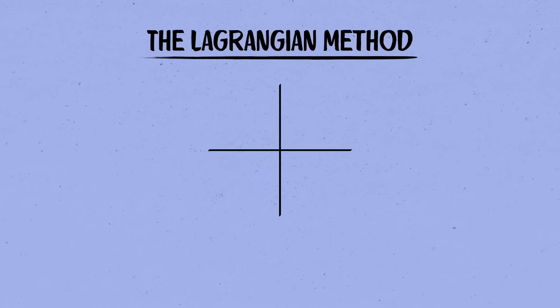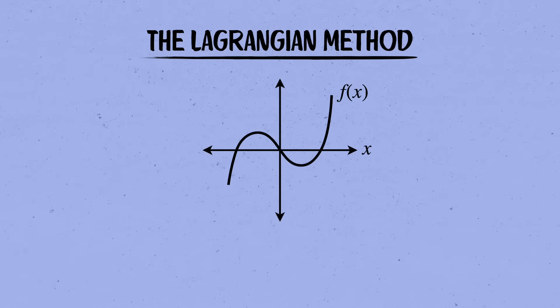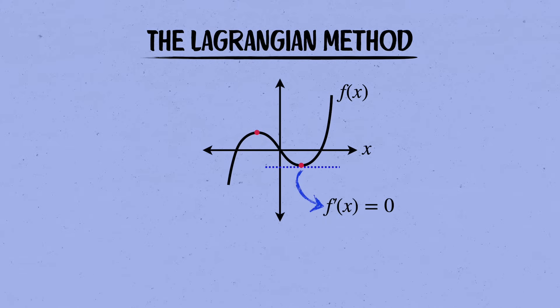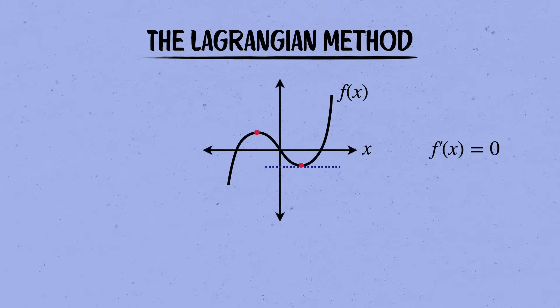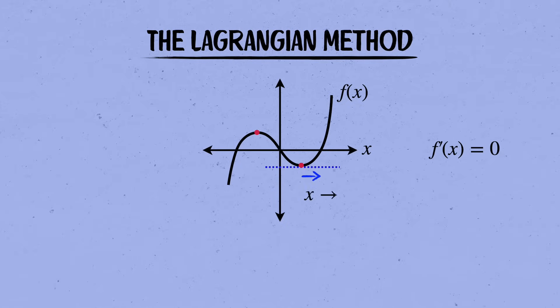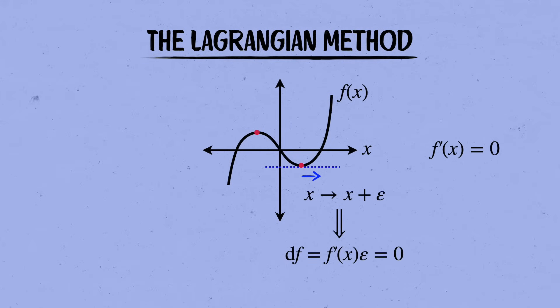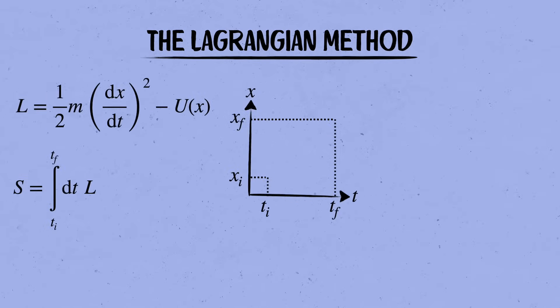When you want to find the minimum or maximum of an ordinary function f, you just need to identify the points where its derivative vanishes. In other words, where the slope goes to zero. Said differently, when you take a little step away from a minimum by shifting x to x plus epsilon for some tiny epsilon, then the change in f is the derivative times the change in x. And so the change in the function is zero when you take a tiny step away from a stationary point. That's just because the tangent to f at a minimum is a horizontal line. And when you take a step along a horizontal line, the height of the function doesn't change.